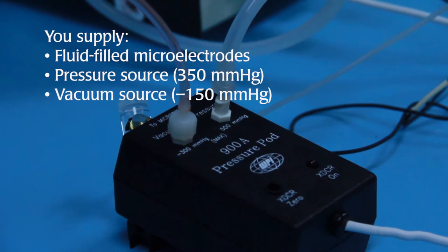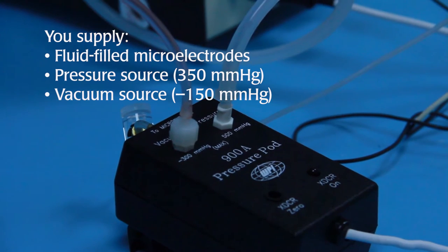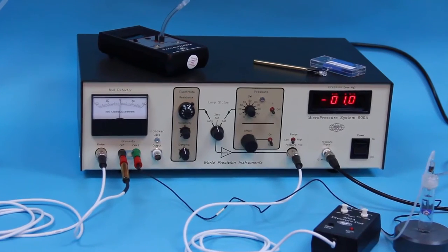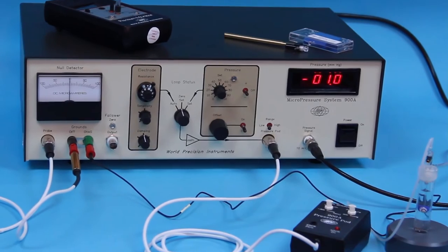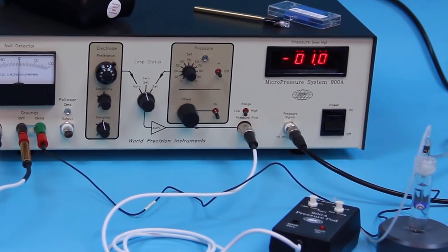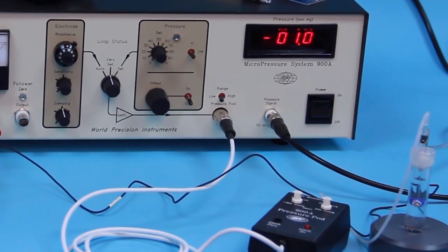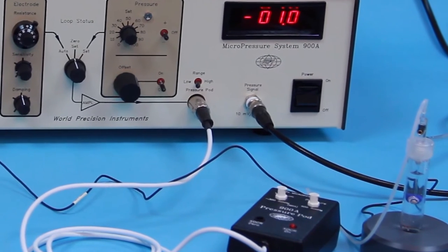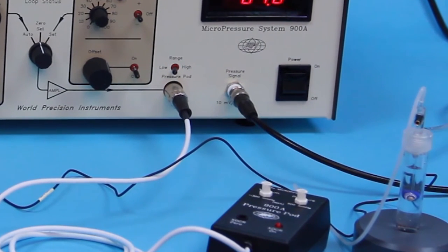You simply supply fluid-filled microelectrodes, a pressure source, and a vacuum source. Measuring electrical potential and pressure simultaneously lets you use potential recording as an additional cue for locating the electrode where visibility is limited or correlate pressure and potential when this is meaningful.